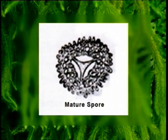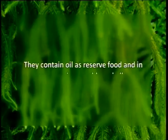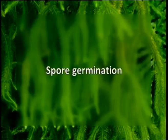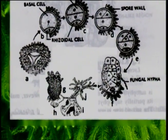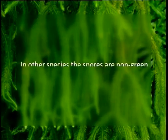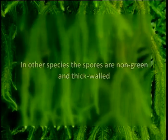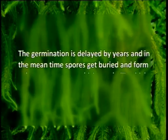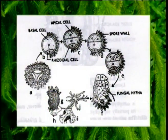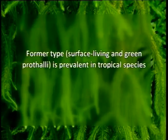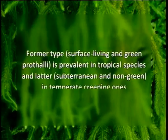Spores are small and light with smooth or ornamented walls and a tri-radiate mark, a point of attachment in the spore tetrad. They contain oil as a reserve food material, and in some species are chlorophyllous. Spores germinate a few days after dispersal and form small free-living green prothalli. Such prothalli are cylindrical or wide with branches or lobes and are short-lived, maturing in the same season. In other species, the spores are non-green and thick-walled. The germination is delayed by years, and in the meantime spores get buried and form subterranean mycorrhizic prothalli which are non-green.